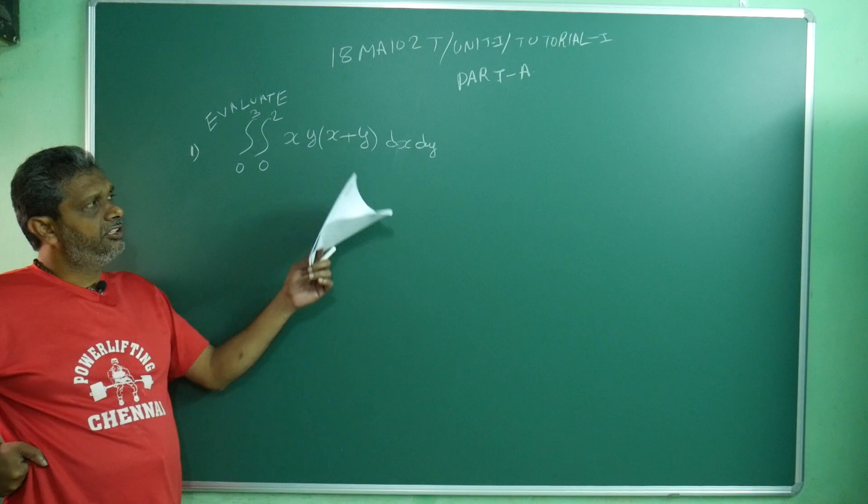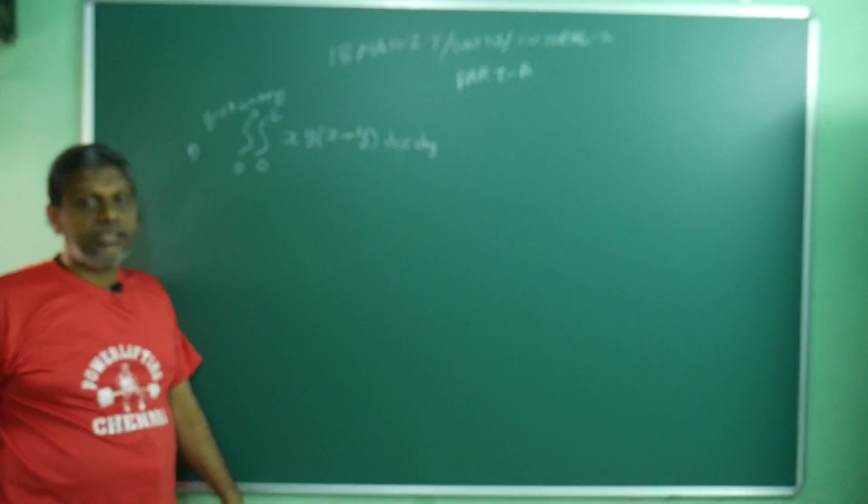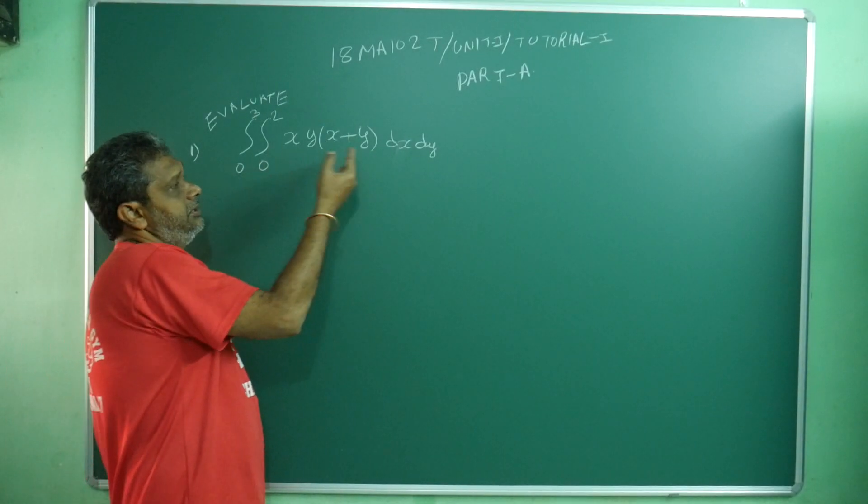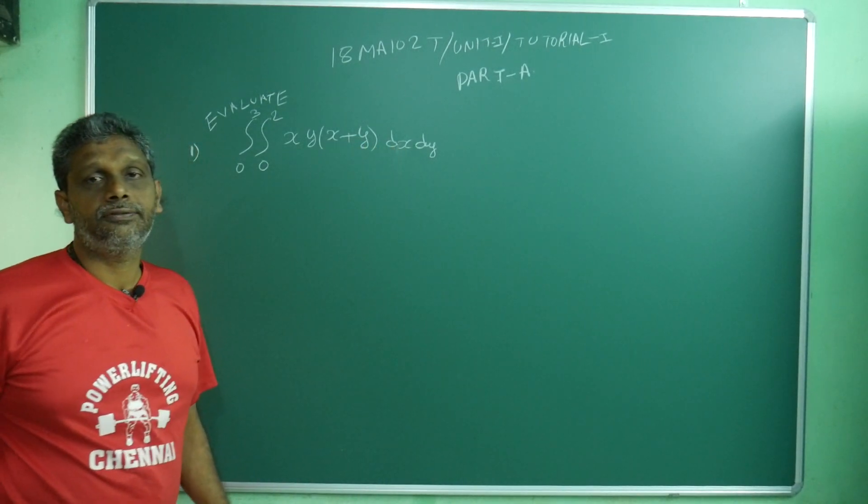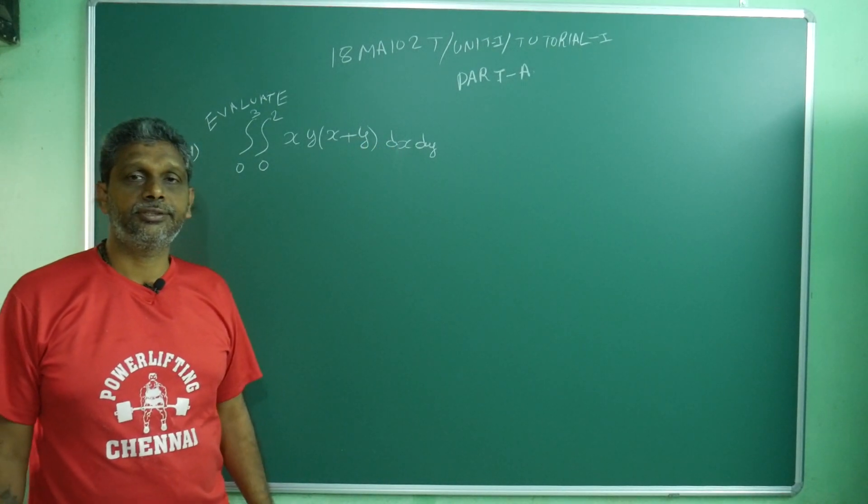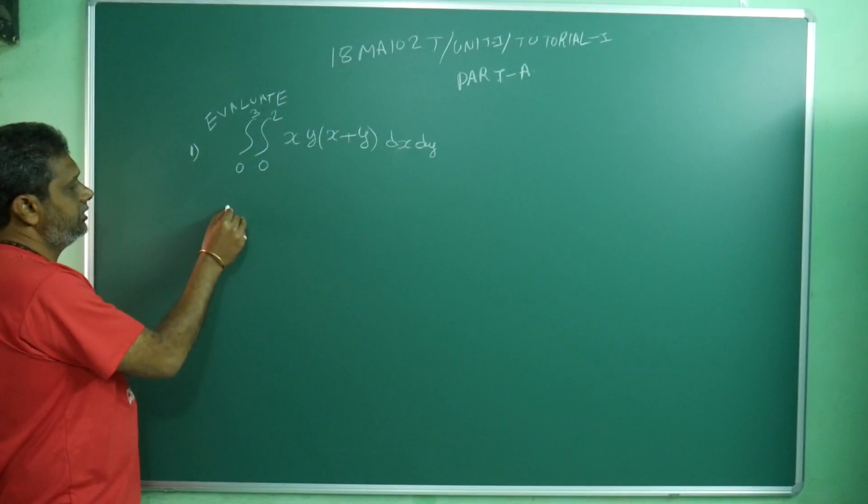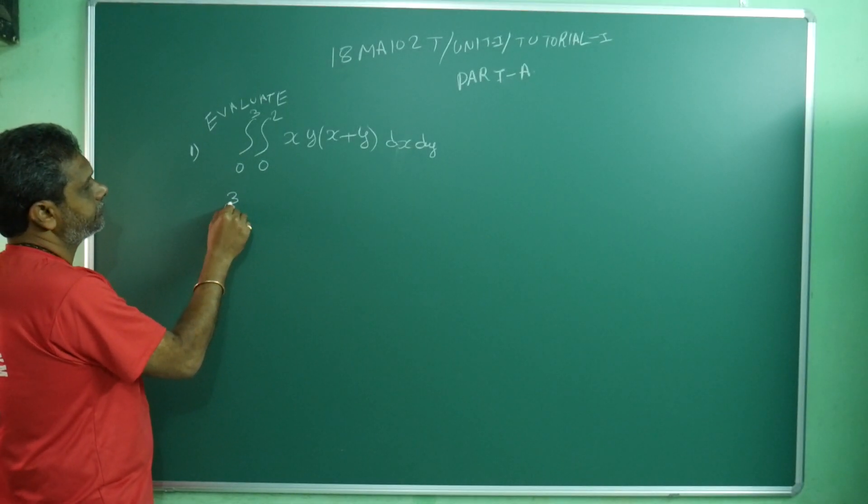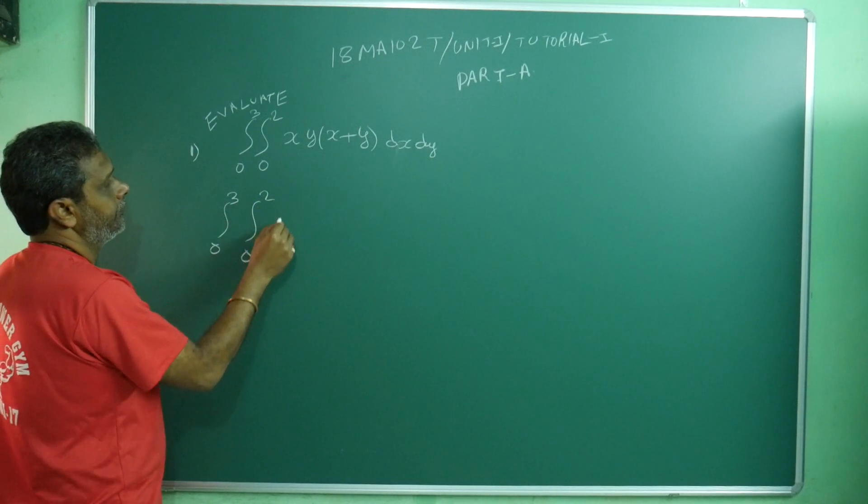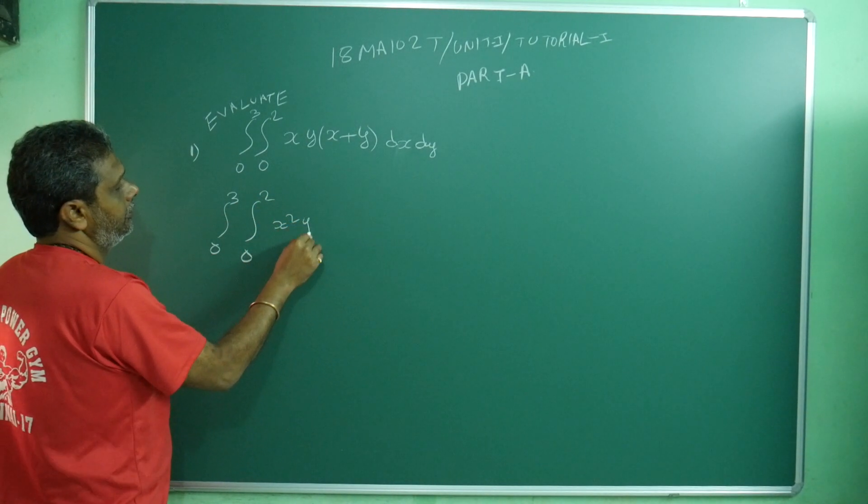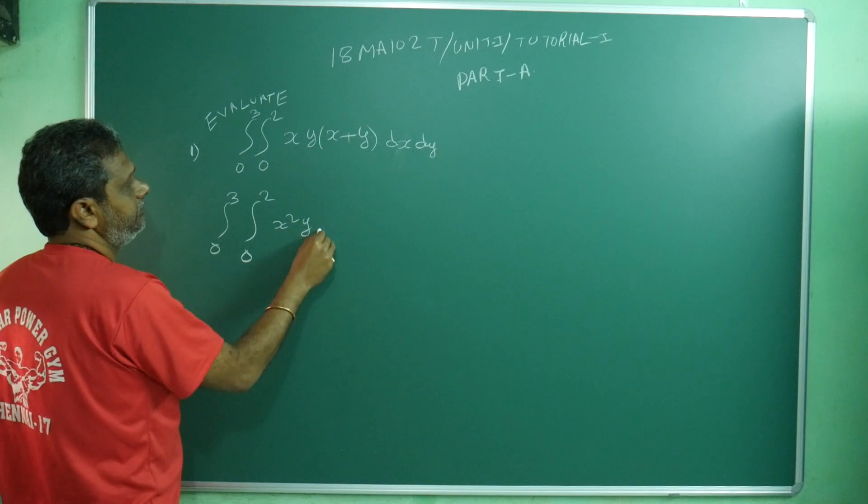The thing is, here already both are constant is given dx. So taken for granted, you can do first integral with respect to x. If I do with respect to x, before doing this, you can take inside and multiply: x squared y plus xy squared dx dy.